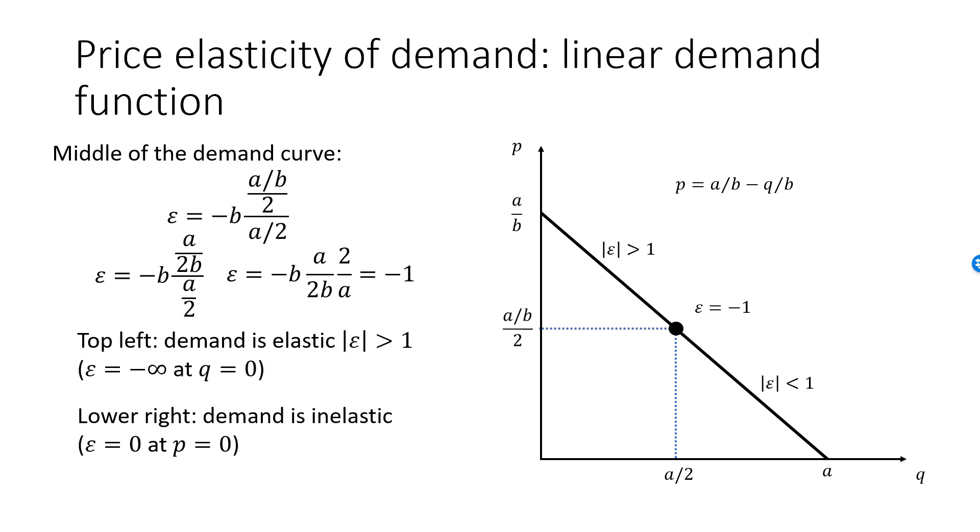Now, you may find it confusing that dQ/dP is minus B, while the slope of the demand curve is minus 1 over B. Keep in mind that dQ/dP is the slope of the demand function, and the graph of the demand function has Q on the y-axis and P on the x-axis. What we have drawn here is a graph of the inverse demand function, not a graph of the demand function.